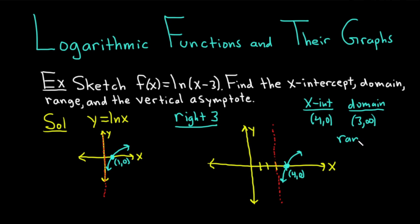Then we have the range. The range is all the possible y values. So the smallest y value, well, it just goes down forever. So it's going to go from negative infinity, and then it goes up forever. So it goes to infinity. So that's the range. We've got the domain. We've got the x-intercept.